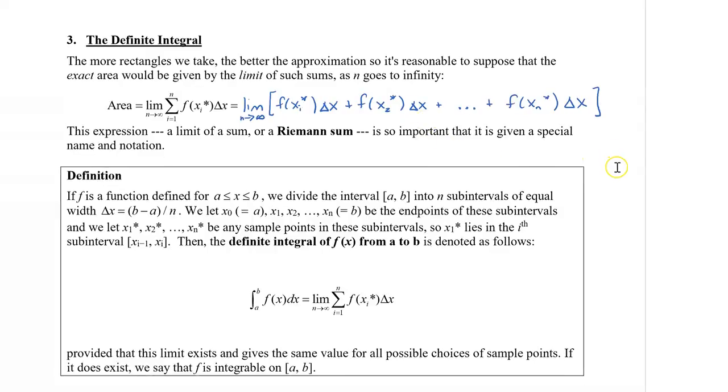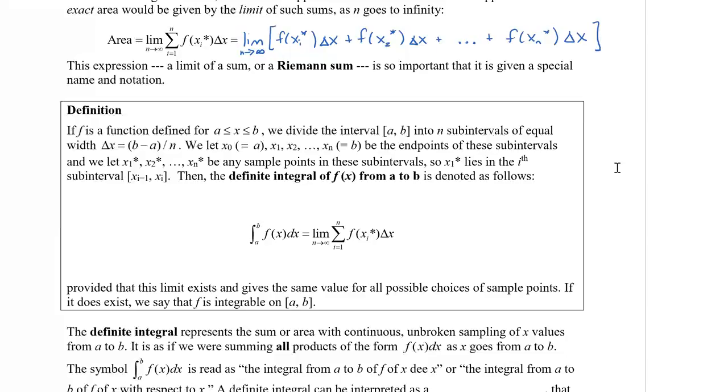So by formal definition, I know it's a little bit wordy, but if f is a function defined for a less than or equal to x less than or equal to b, which means that there's a function between a and b, we're going to divide the interval into n subintervals of equal width, which we'll call delta x. And you can see that's b minus a divided by n, like before. We're going to let x naught equal to a, which is the first number, and then x1 all the way to xn, xn will be our last number, which is going to be represented by the letter b. These are going to be the end points of these subintervals.